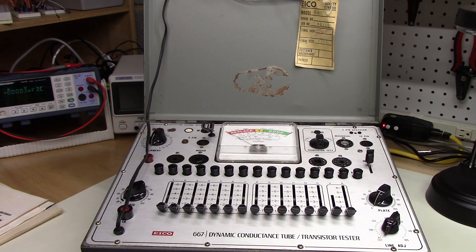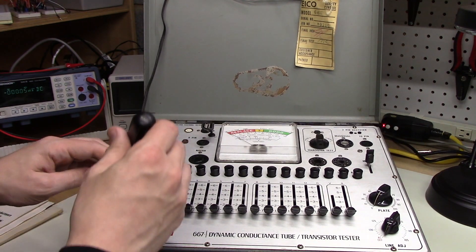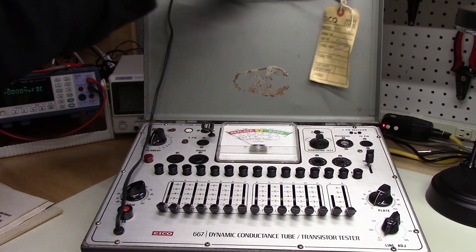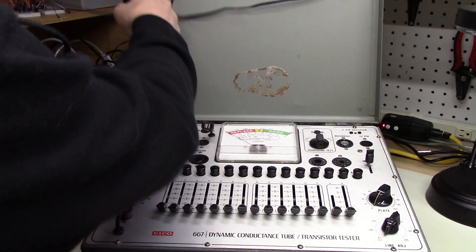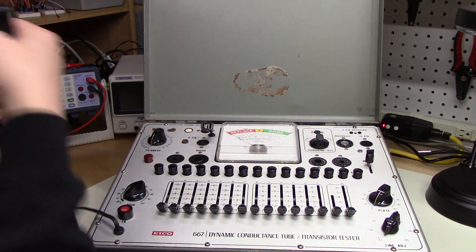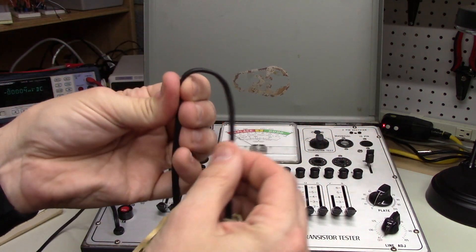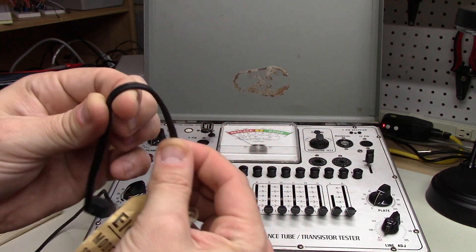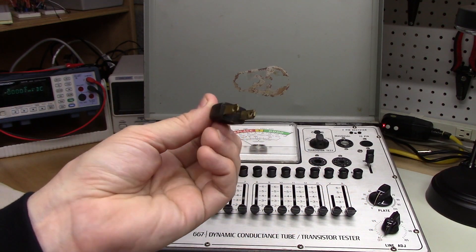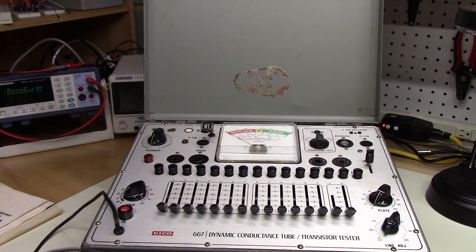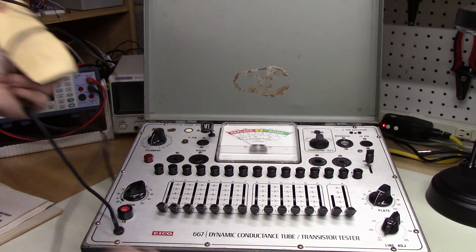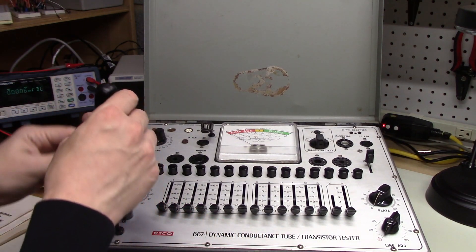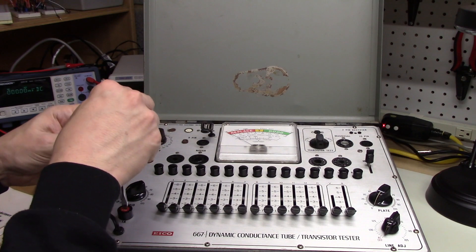Let's take the cord off. The cord is not cracking. There's no rubber rot. It's very supple. Again, it's an unpolarized two-prong cord, very standard for this class of equipment in that day.